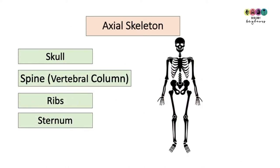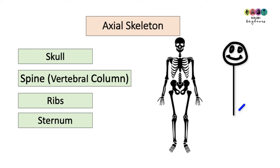The axial skeleton is made up of the bones of the skull, the spine which is made up of individual vertebrae, the ribs and the sternum which is your breastbone. An easy way to remember the parts of the axial skeleton is to draw a little diagram: start with a circle for the skull, then a line for the spine with a little arrow at the end for the coccyx, then a box for the ribcage, and a little dot in the centre for the sternum.